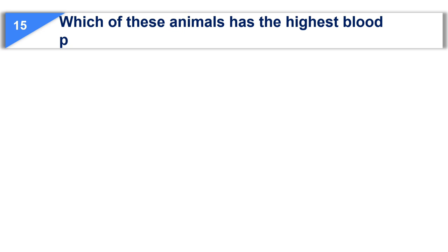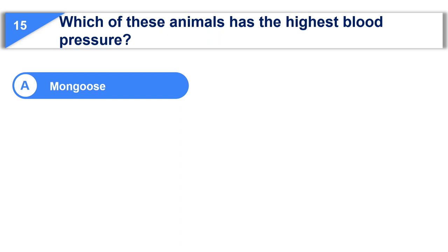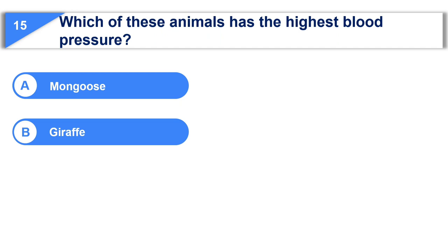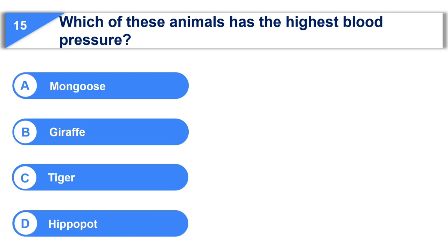Which of these animals has the highest blood pressure? Option A, mongoose. Option B, giraffe. Option C, tiger. Option D, hippopotamus.